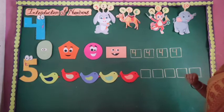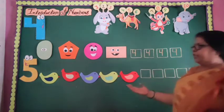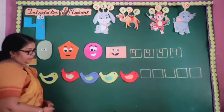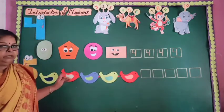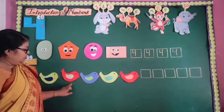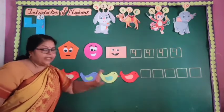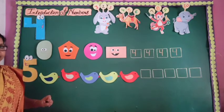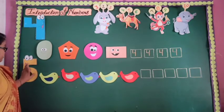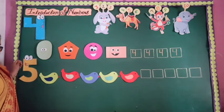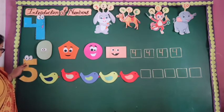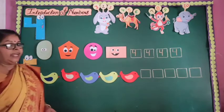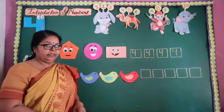Okay, let's count for the next number. How many boxes are here? Let's count: 1, 2, 3, 4, 5. How many boxes are here? 5 boxes. Okay? This number is 5. Number 5, let's go.